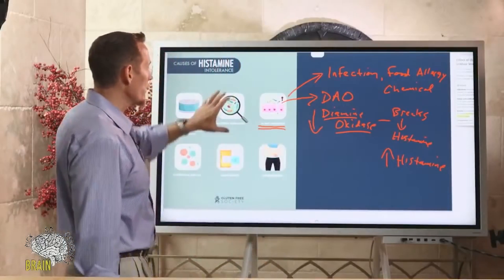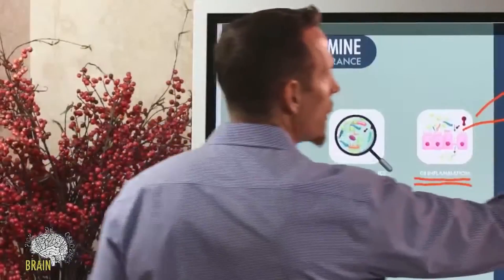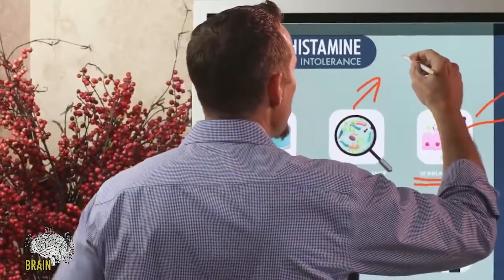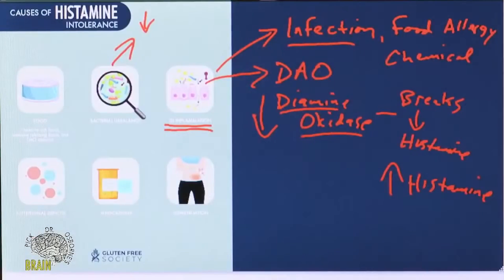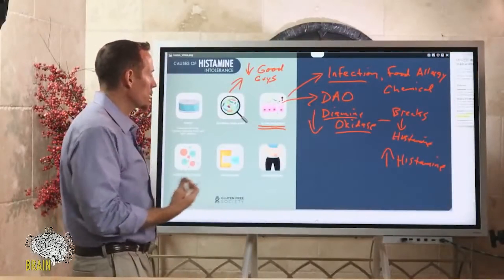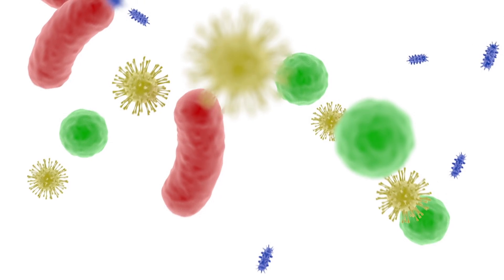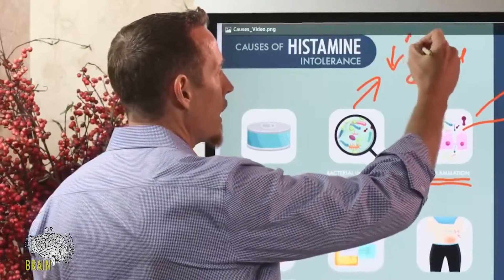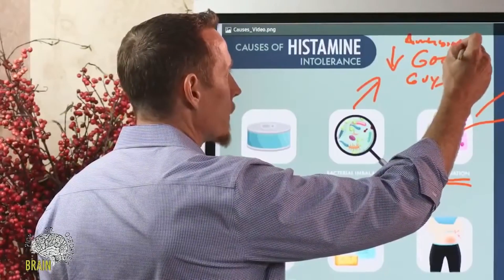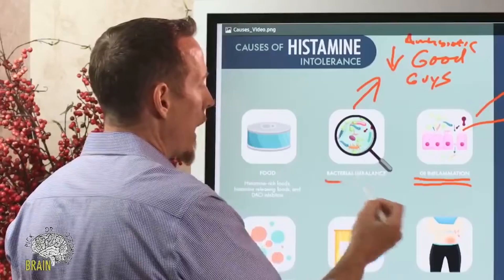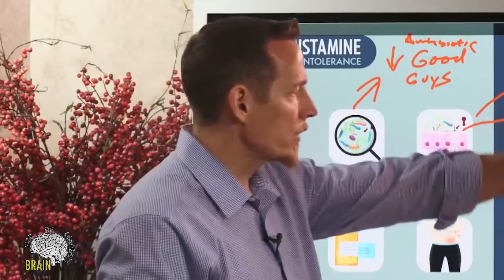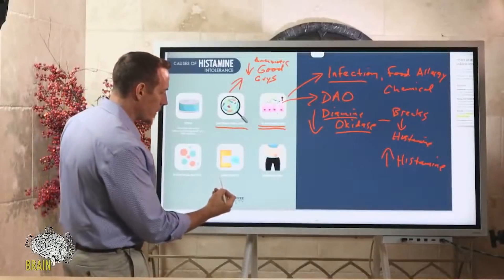We also know bacterial imbalance plays a role. People with low levels of beneficial bacteria — the 'good guys' in the microbiome — face problems, because those symbiotic bacteria help you digest food, support your immune system, and regulate gut function. When someone takes an antibiotic, for example, they can wipe out their good flora, and that imbalance can contribute to a reduction in the ability to generate diamine oxidase.